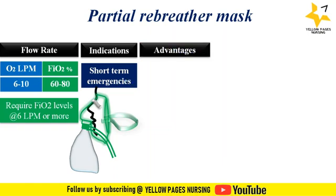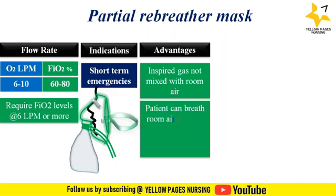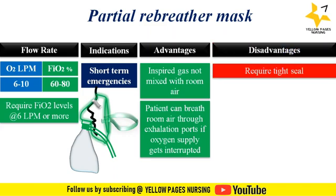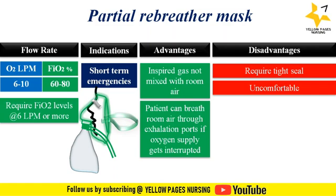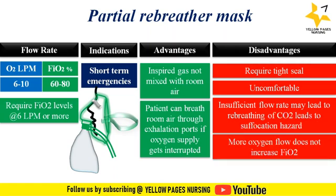Advantages of partial rebreather mask include that the inspired gas does not mix with room air, and the patient can breathe room air through exhalation ports if oxygen supply gets interrupted. Disadvantages include it requires a tight seal, is uncomfortable, and insufficient flow rate may lead to rebreathing of carbon dioxide causing a suffocation hazard. More oxygen flow does not increase FiO2. In simple terms, the partial rebreather mask is a simple mask with an additional reservoir that allows accumulation of oxygen-enriched gas for rebreathing; the reservoir bag must remain inflated and kept one-third to half inflated at all times.